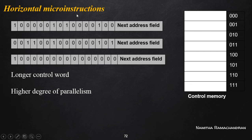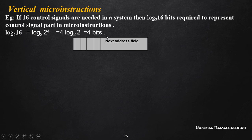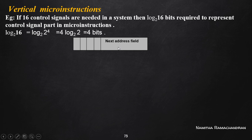Based on this discussion, horizontal micro instructions are longer instructions with a higher degree of parallelism. Now, for vertical micro instructions, consider a system with 16 different control signals. We need only 4 bits in the control signal field. The branch address field size depends on the control memory size. Using these 4 bits, we can represent 16 different control signals, since 4 bits generate 16 different combinations.